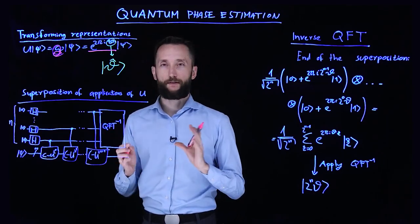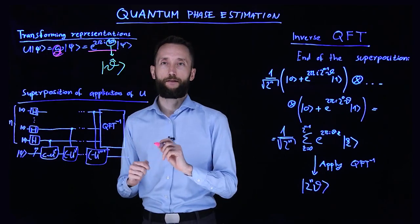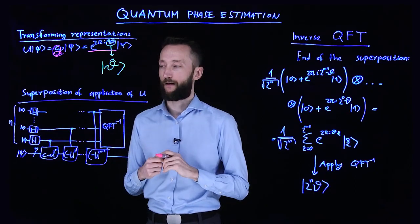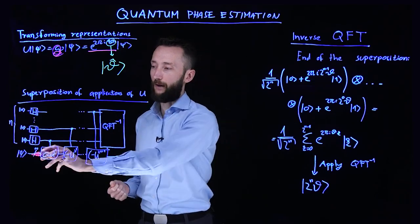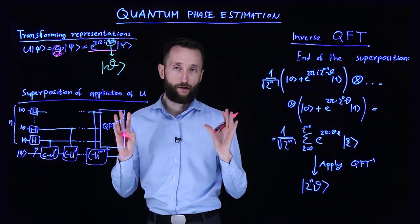The algorithm uses two sets of registers. You have n registers which define the precision of your estimation, where the estimated eigenvalue will be written. Then you have the actual eigenvector coming in through m registers.